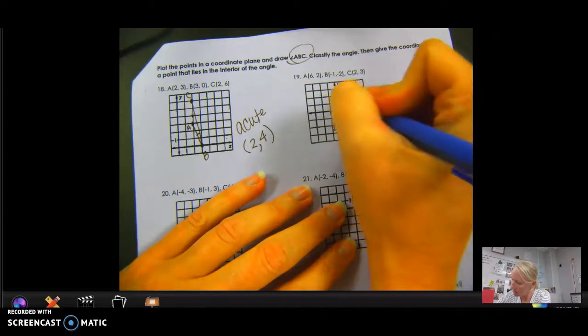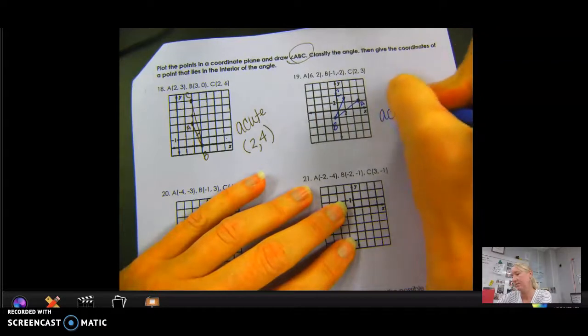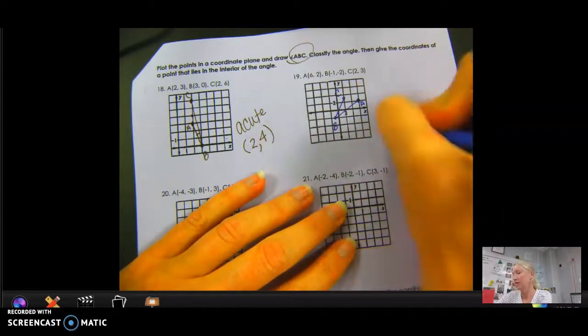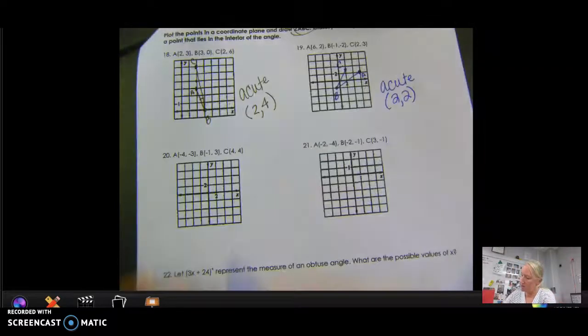Again, I'm going A to B to C. So again, that's another acute angle. And it looks like 2, 2 is on the inside.